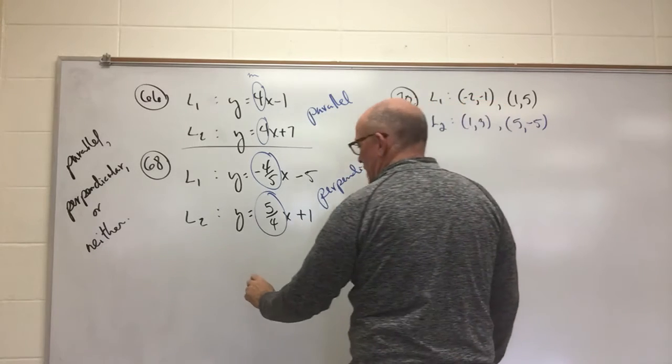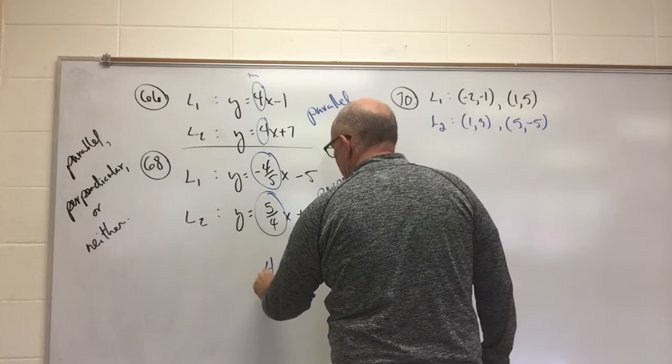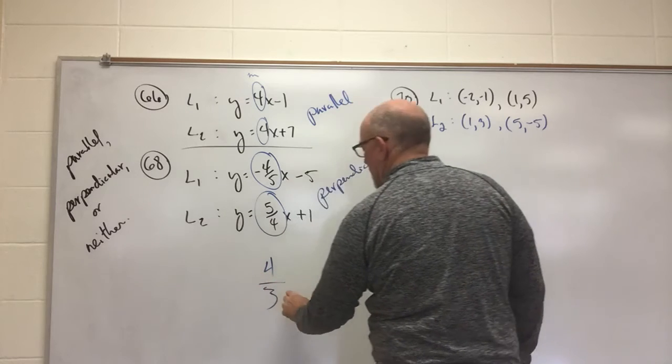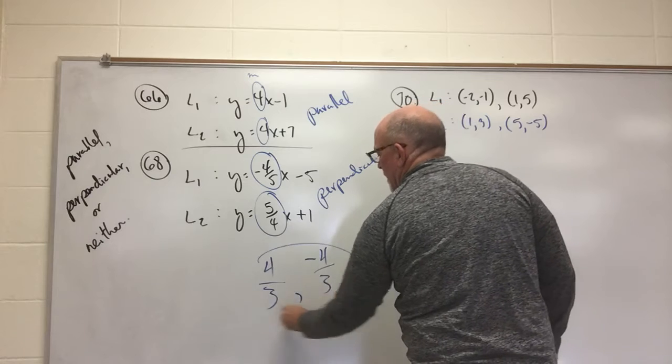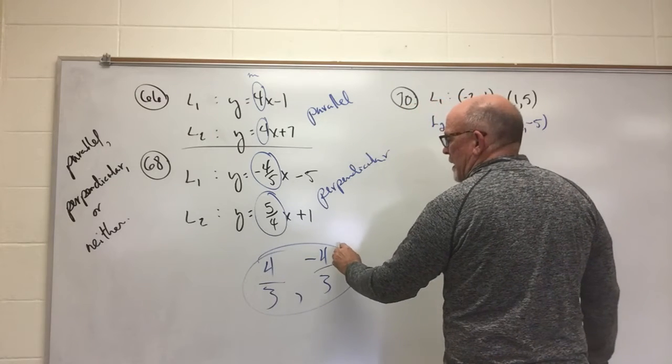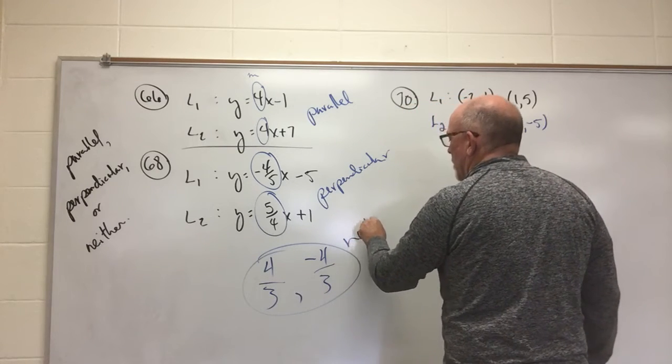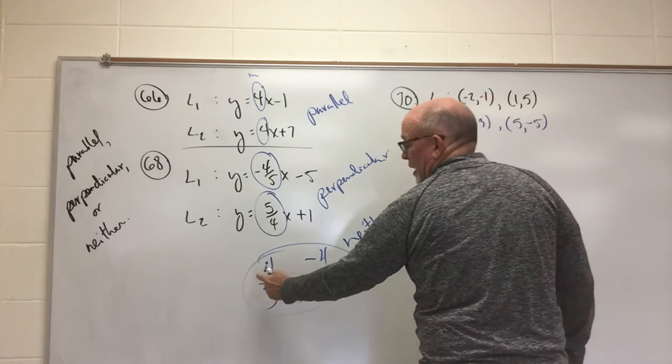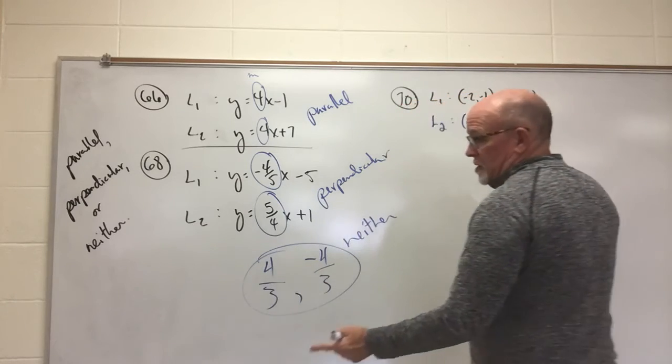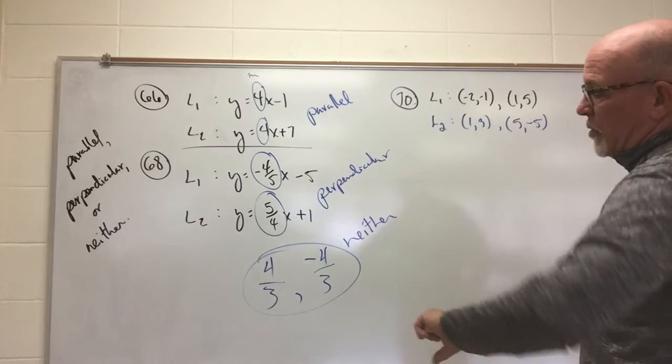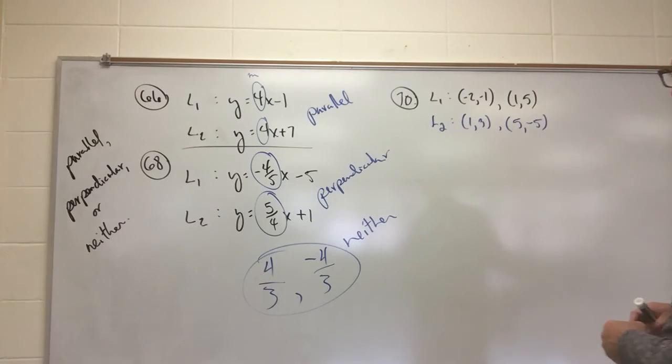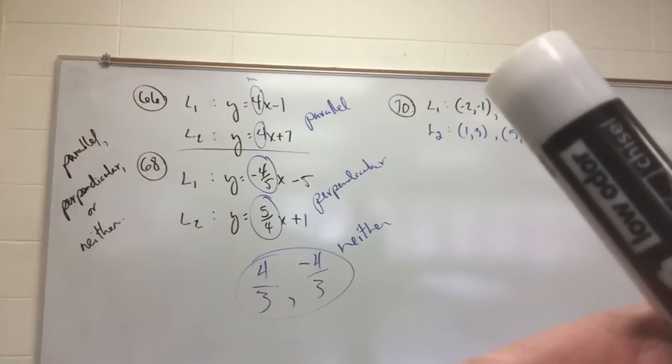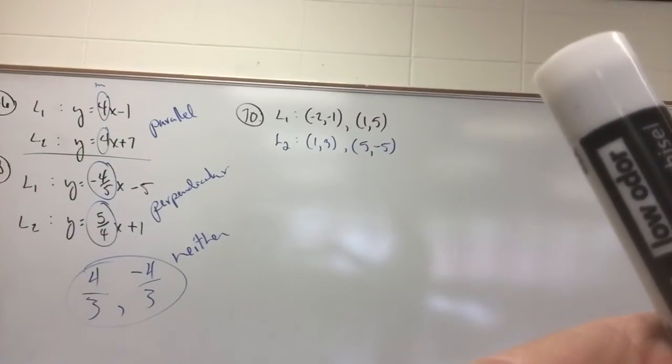If you were to examine slopes, such as 4 over 3, and if you were looking at a negative 4 over 3, this would be a scenario for neither. Although they are positive and negative, that's one part of what you need. They are not reciprocals of the other, so this would be a neither scenario. All right. Move our camera down. Catch number 70.